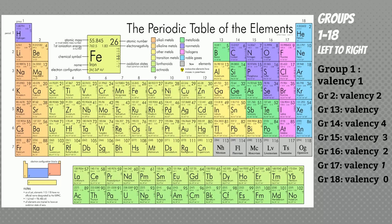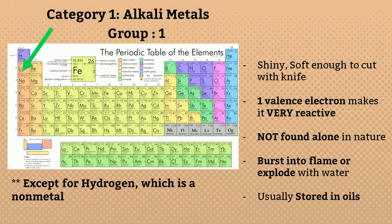Now let us see all the categories in detail. Category 1: they are alkali metals, belonging to group 1, except hydrogen — all are metals, while hydrogen is a non-metal. From lithium to francium they are shiny, soft enough to cut with a knife, and have 1 valence electron, which makes them very reactive. They are not found alone in nature and burst into flame or explode with water, so they are usually stored in oils.